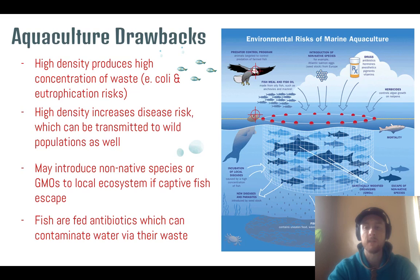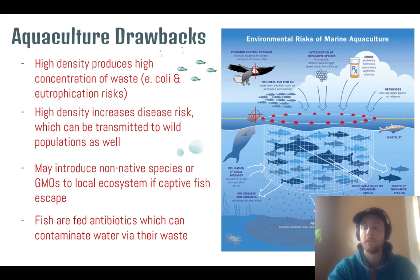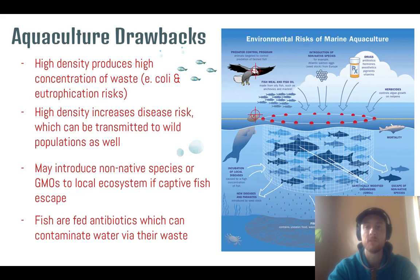We can look at this diagram here to summarize a lot of these unintended consequences or drawbacks of aquaculture. The fish waste becomes highly concentrated, creating a contamination issue. We could have the escape of non-native species or GMOs, diseases spreading from the cages into wild fish populations nearby, and the potential for antibiotics to be introduced into the aquatic ecosystem through fish waste.